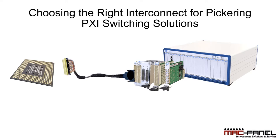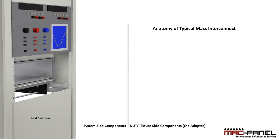That's where mass interconnect comes in. Before we look at more detailed examples, let's first consider what mass interconnect is. In its simplest form, it's a system that allows all the test resources to be transmitted efficiently to the device being tested. So what does a typical mass interconnect system look like in practice? Let's look at the components that go into a typical system.